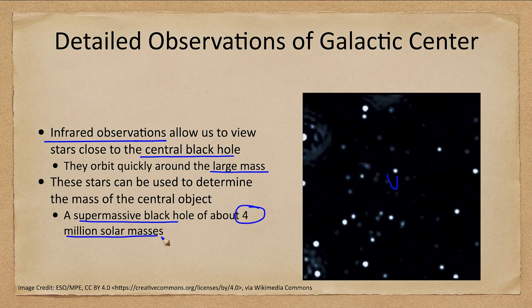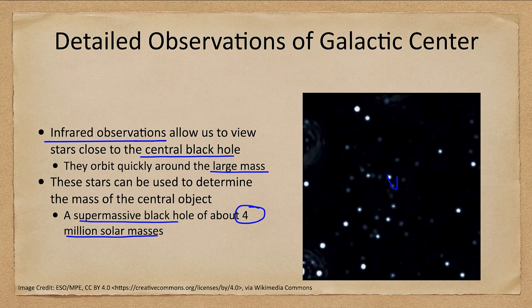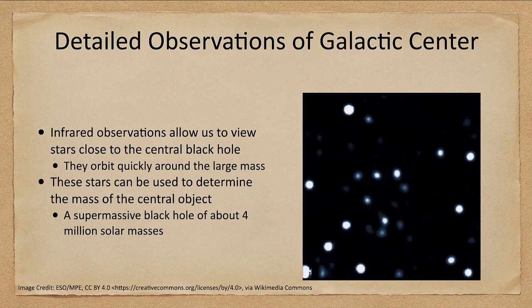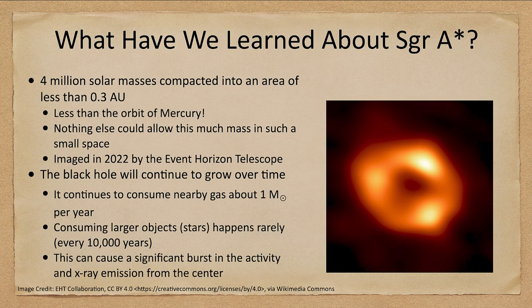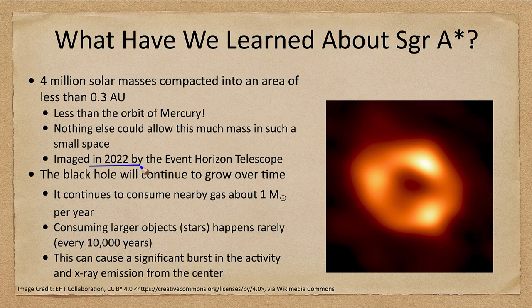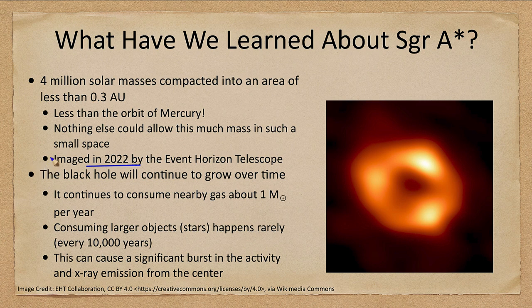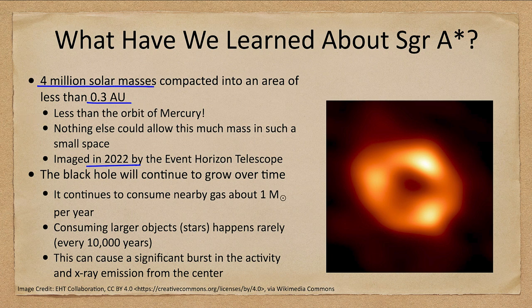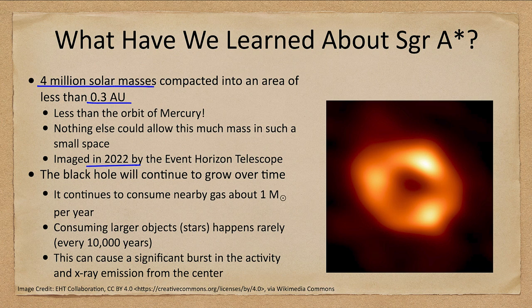We've been able to learn more about this with modern instruments. We use what is called the Event Horizon Telescope to be able to map this, and we were able to map the black hole at the center of our galaxy in 2022. What we find is that there are four million solar masses compacted into an area less than 0.3 AU's. If you recall, Mercury is about 0.4 AU's from the sun. This is four million suns within the orbit of Mercury. Nothing else that exists could allow that much mass to exist in such a small space.